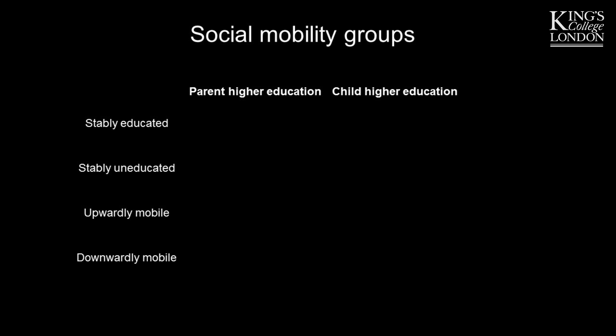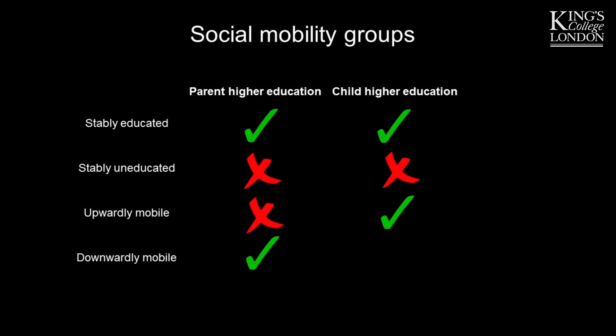To look at the genetic influence on social mobility, they created four social mobility groups. Families where both parent and child attended higher education were classed as stably educated. Families where neither parent nor child attended higher education were classed as stably uneducated. Families where parents did not go on to higher education but children did were upwardly mobile, and families where parents went on to higher education but children did not were downwardly mobile.